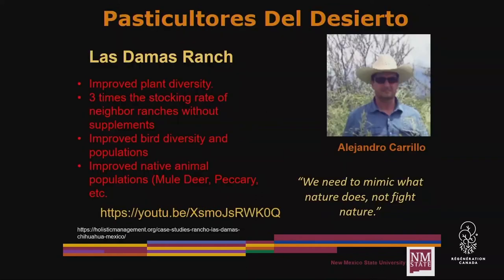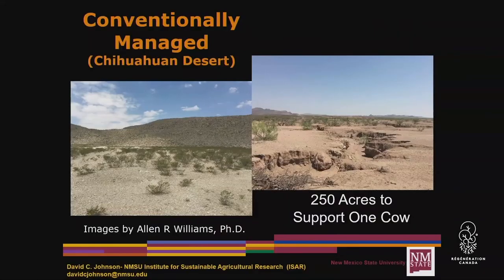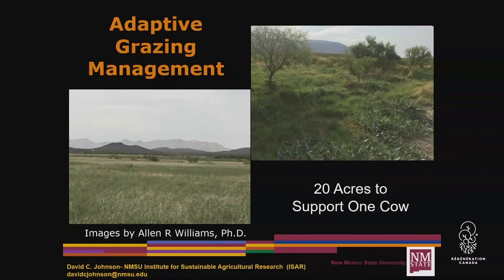Alejandro Carrillo in the Chihuahuan desert south of us — about nine inches of rain. He's improved his plant diversity, his stocking rate, bird diversity, and native animal population. This used to be, when the Spaniards came through, belly high to a horse with grass. And yet with our grazing techniques, we completely destroyed it. But what he's done is bring it back. He went from 250 acres per cow to 20 acres to support one cow, and restored the grasslands.